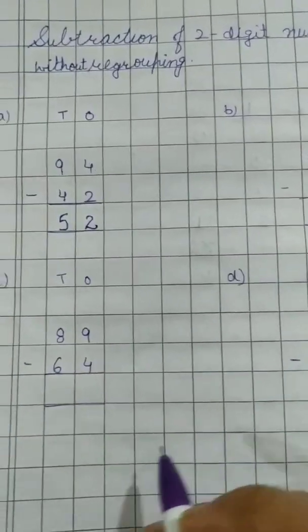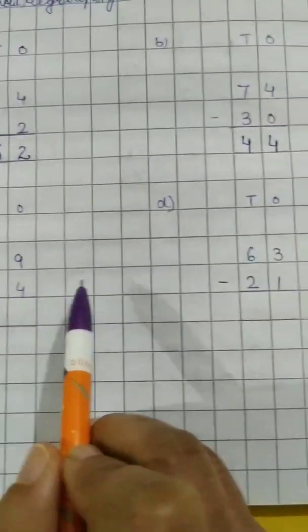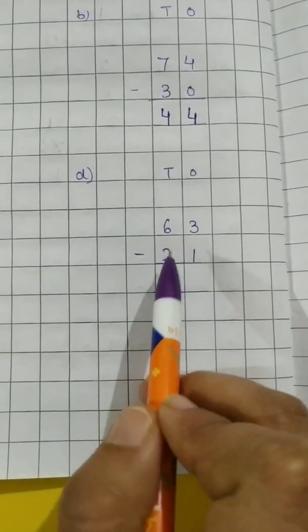Now C and D part you have to do yourself. C part is 89 minus 64. And D part is 63 minus 21.